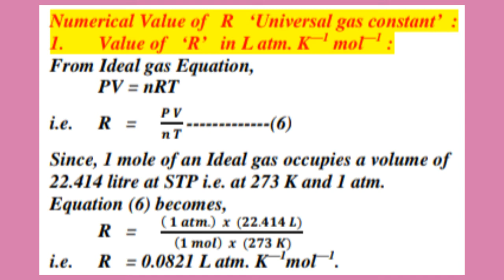Since one mole of an ideal gas occupies a volume of 22.414 liters at standard temperature and pressure — standard temperature meaning 273 Kelvin and standard pressure meaning 1 atmosphere — we put these values into equation 6. R equals 1 atmosphere multiplied by 22.414 liters, because one mole of a gas occupies 22.414 liters at standard temperature and pressure.